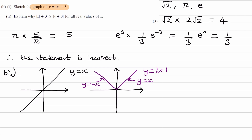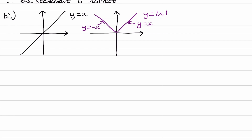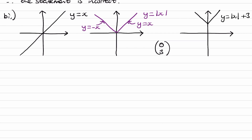Then, y equals modulus of x plus 3 just moves everything up three places — this is a translation of vector (0, 3). Shifting everything up by 3, the graph looks the same V-shape but higher. The vertex coordinate, which was originally at (0, 0), is now shifted up to (0, 3).